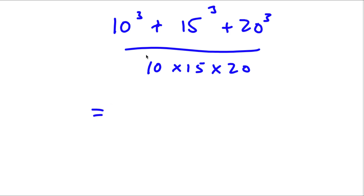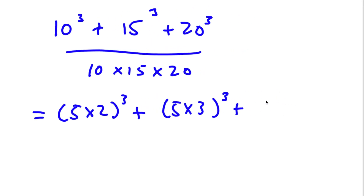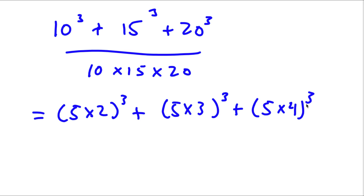So I'm first going to rewrite this: 10 is the same as 5 times 2, so (5×2) to the power of 3, plus 15 is 5 times 3, so (5×3) to the power of 3, plus 20 is 5 times 4, so (5×4) to the power of 3.